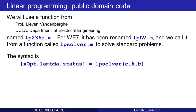The syntax is listed here. The input arguments are the column vector C, the array A, and the column vector B. C is associated with the linear cost, and A and B are associated with the linear constraints. There are three output arguments: the optimal x, the derivatives of the optimal cost with respect to the elements in B, and a status variable.